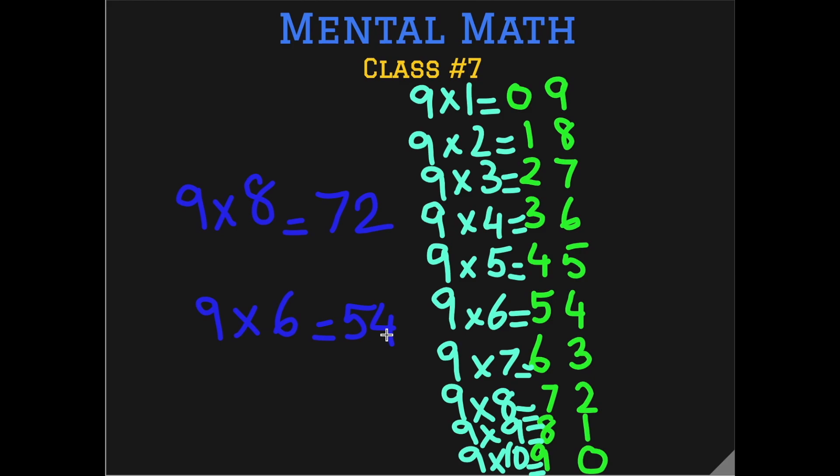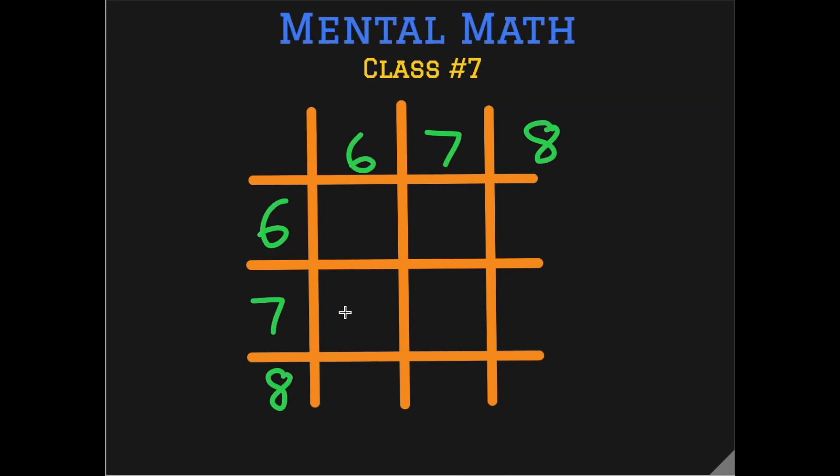Now what are we left with? We are left with some multiplication facts of the table of 6, 7 and 8. So let's have a look at what is left to be learned. Now look at these boxes. First let's fill them up.